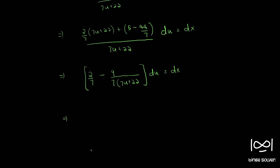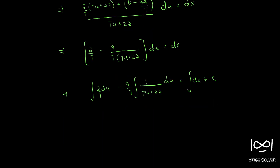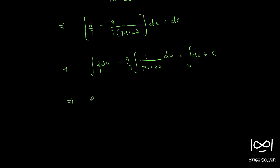Taking the integral on both sides, we have the integral of 2/7 du minus (9/7) times the integral of 1/(7u plus 22) du equals the integral of dx plus c. This becomes (2/7)u minus (9/7) times log(7u plus 22)/7 equal to x plus c.